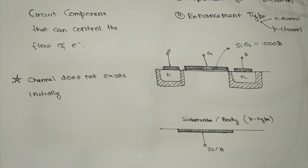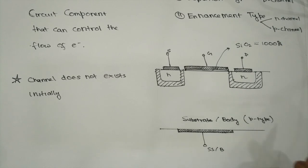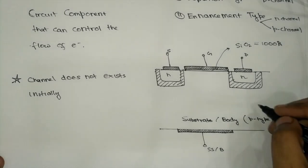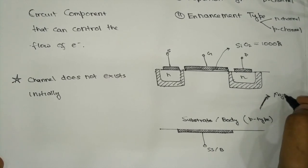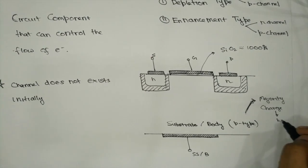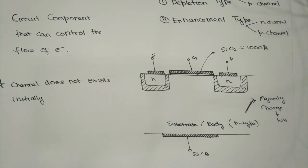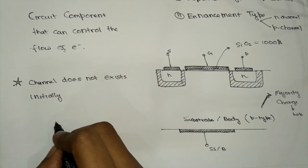We now have to devise a method of creating a channel between the drain and the source in enhancement type MOSFET. As we see, the substrate is made of P-type material. In a P-type material, the majority charge carriers are holes and the minority charge carriers are electrons.